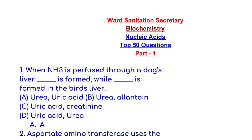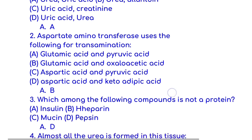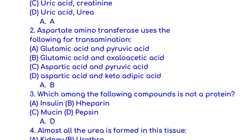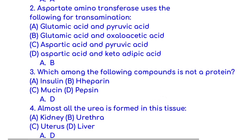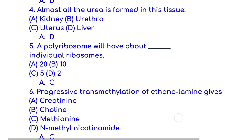First one: When ammonia is perfused through a dog's liver, urea is formed. Uric acid is formed in bird's liver. Aspartate aminotransferase uses the following for transamination: glutamic acid and oxaloacetic acid. Which among the following compounds is not a protein? Pepsin. Almost all the urea is formed in this tissue: liver.